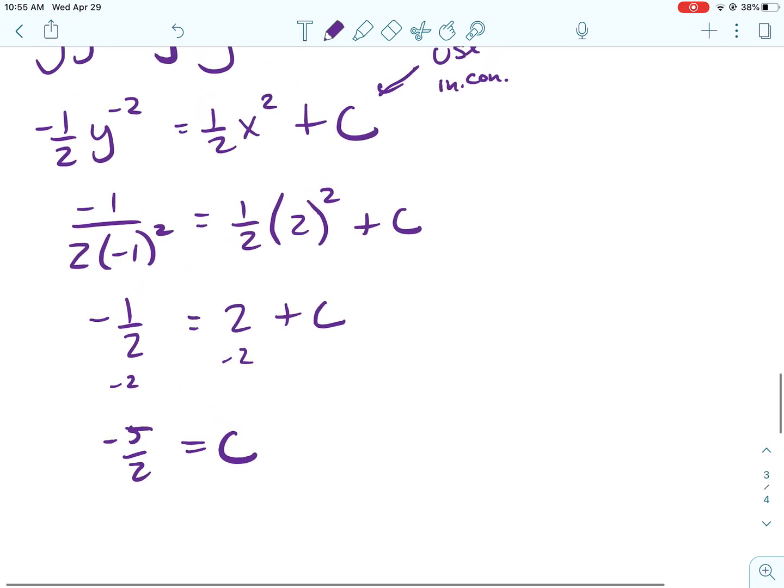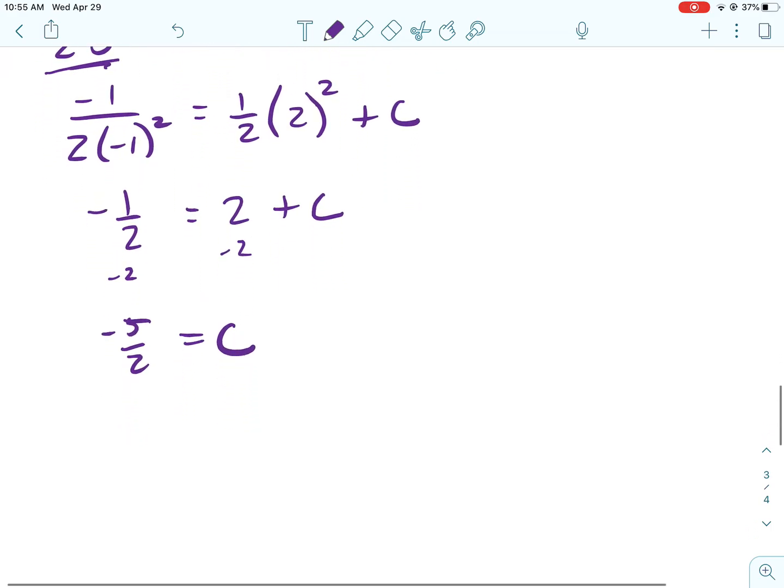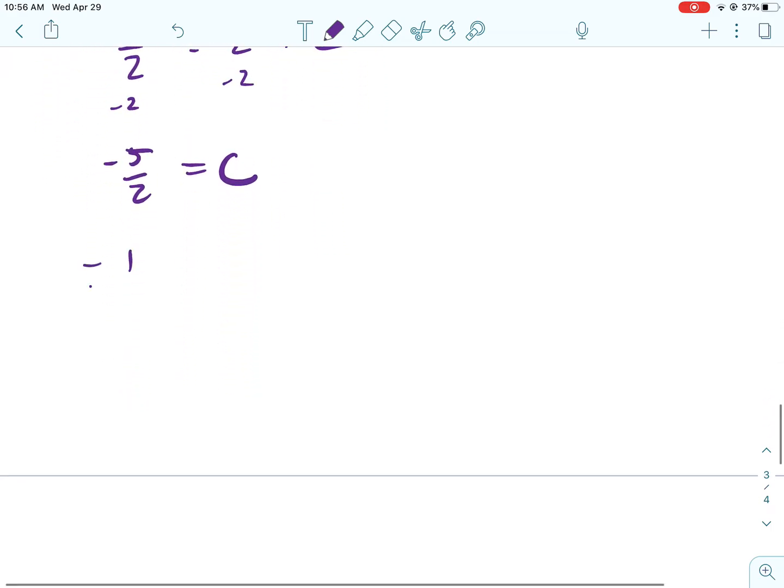All right, so that's going to be negative 1 half, and then that's going to be 4 times 1 half is 2. And then when I subtract 2, I'm going to get negative 5 halves is C.